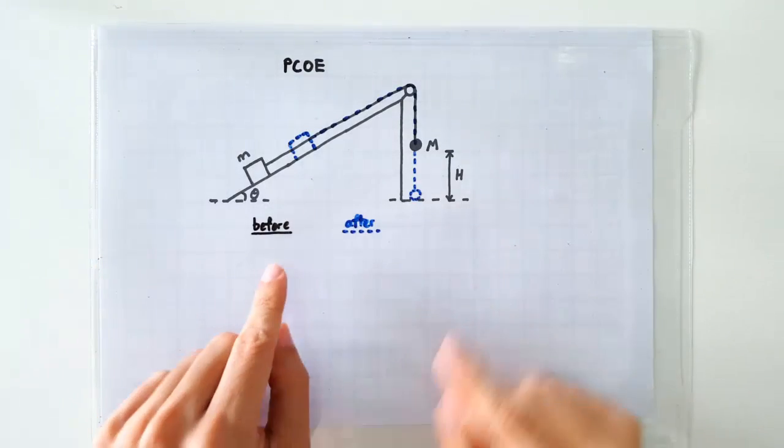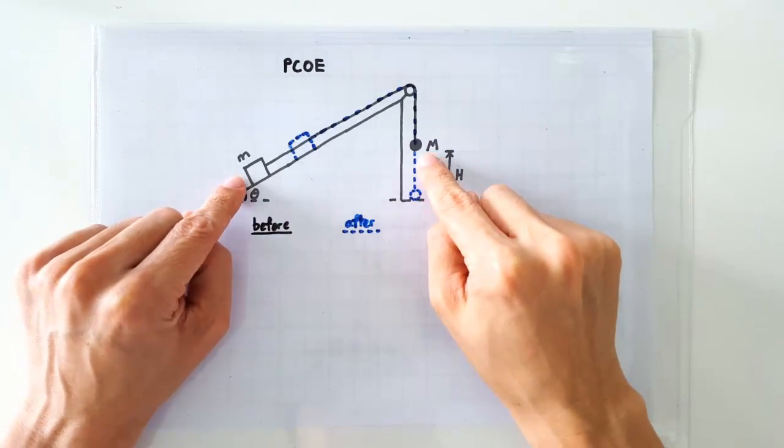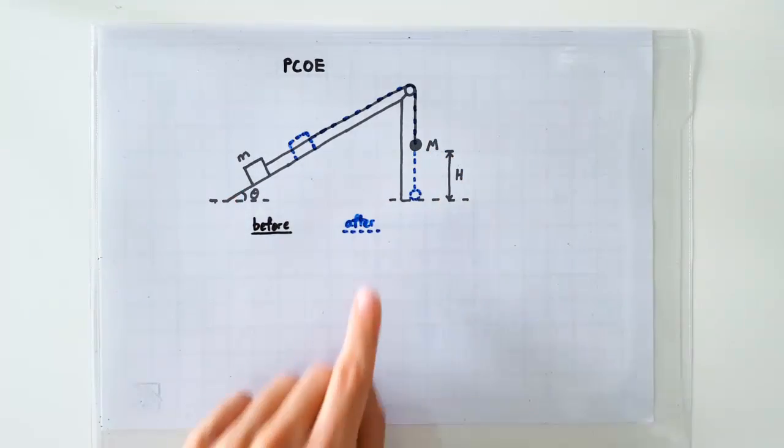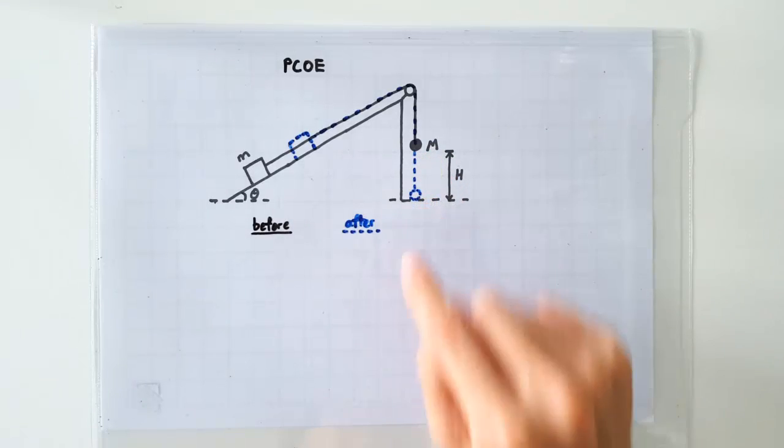So for this problem, the before instance should be the instance when the system was let go. And the after instance should be the instance when the lead ball just hits the ground here.